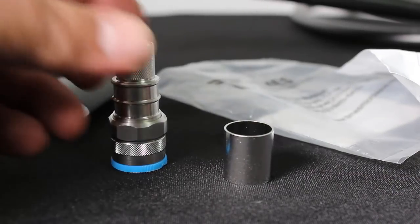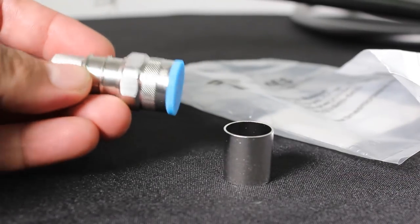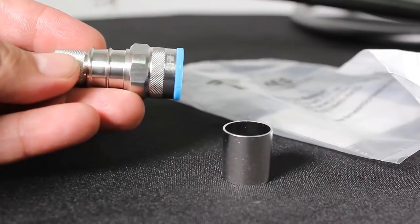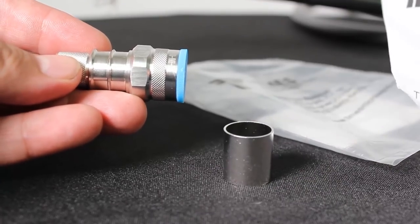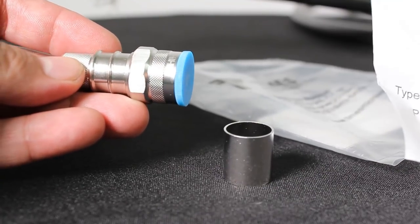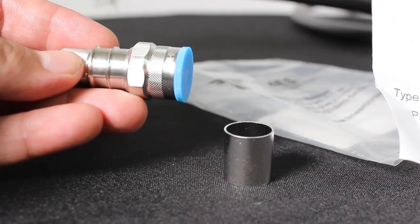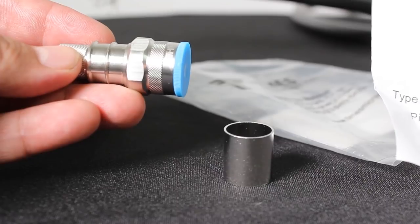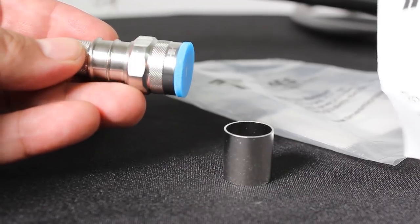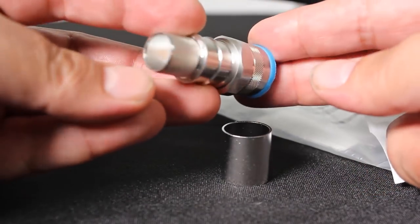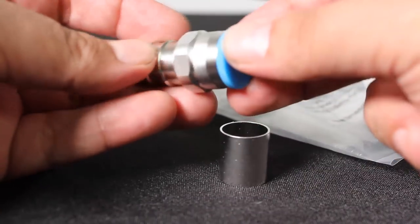Hey, what's going on guys? I just thought we'd take a quick look here at the connector, the Type N male connector. Part number is EZ600-NMH-X-3190-2627. Here it is. This is for the LMR600 cable.